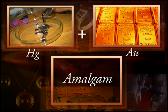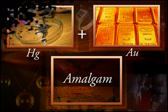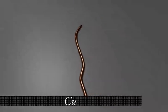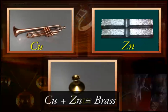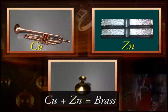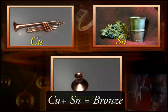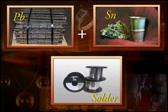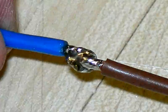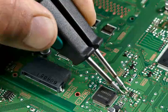An alloy of the metal mercury is called an amalgam. Copper is a good conductor of electricity, but when mixed with zinc to form brass, or mixed with tin to form bronze, it loses its conducting property. An alloy of lead and tin, which is called solder, has a low melting point and is thereby used for welding electrical wires together.